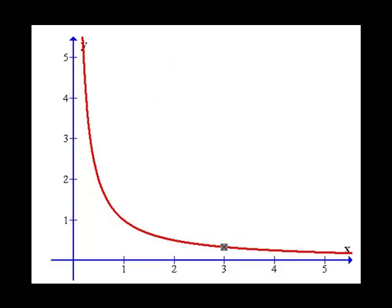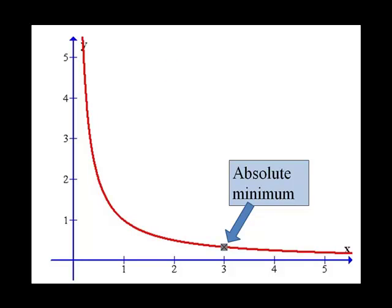But if we put in a point at 3 where we had a closed interval, we do have an absolute minimum because it was a closed interval.